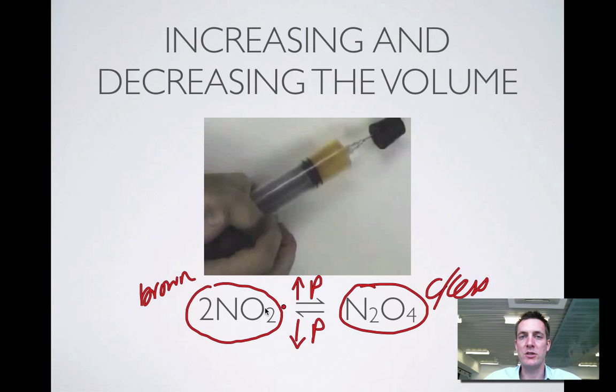Now you might look at this equation and notice there's a different number of moles of gas on the two sides (2NO2 ⇌ N2O4). You might think about Le Chatelier's principle and what the system will try to do in response to a pressure increase. The next film will go into the principles of this.